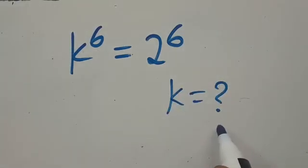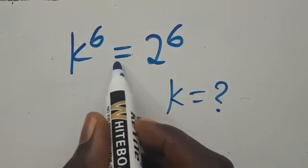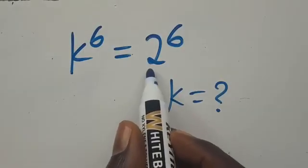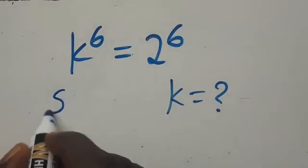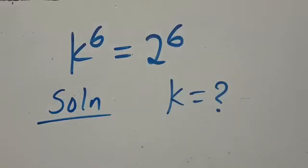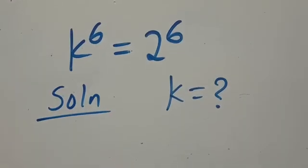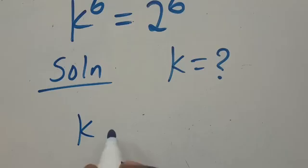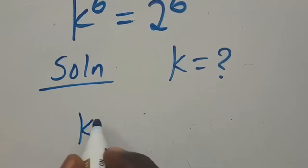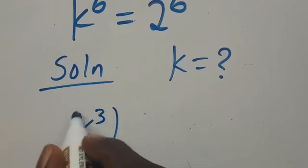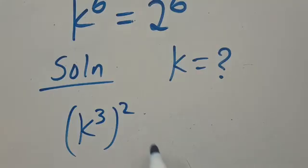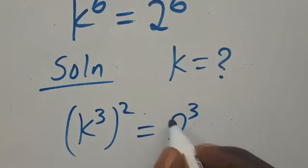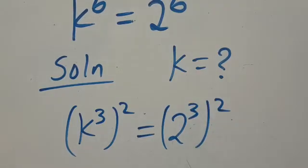What will be the value of k, given that k to the power of 6 equals 2 to the power of 6? Let's go to the solution. From here we can simplify this as k to the power of 30, all in brackets, to the power of 2, equals 2 to the power of 30, all in brackets, to the power of 2.